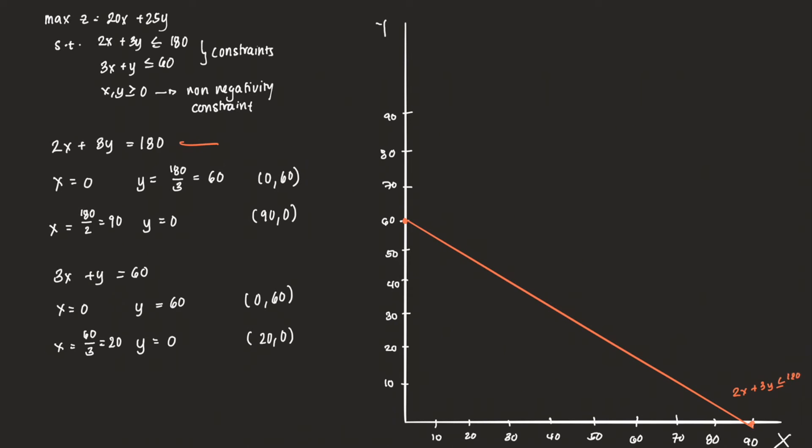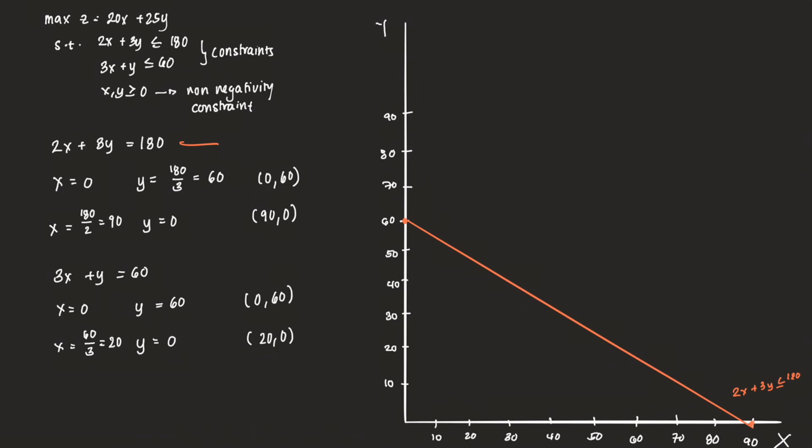Now let's graph our second constraint with a yellow line. We plot (0, 60) and then (20, 0). Connecting those two points represents our second constraint.